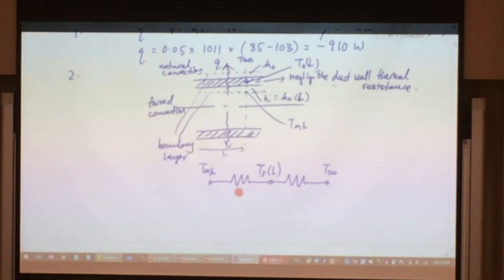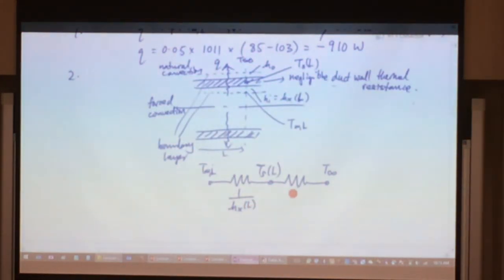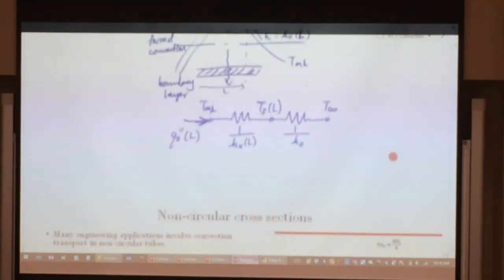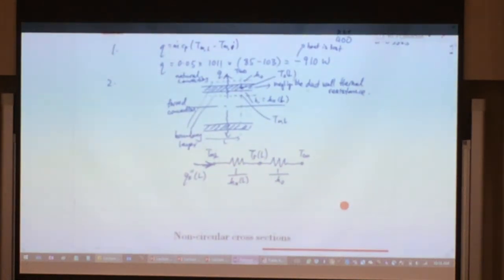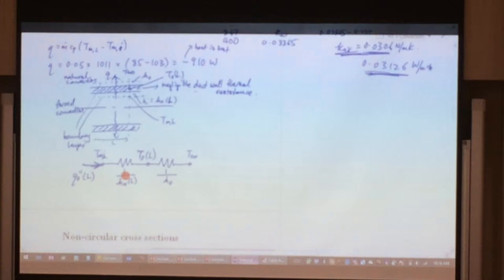The thermal resistance for convection, that's 1 over H. In this case, for the internal one, that's 1 over H_x at L. And the thermal resistance for the one that's outside, that's 1 over H_0. The current going through there, the so-called current, that's actually your heat transfer rate. This one will be our heat flux going in there, that's Q'' at L. This is the setup. What I'm going to do is to solve it using this setup, this thermal circuit.